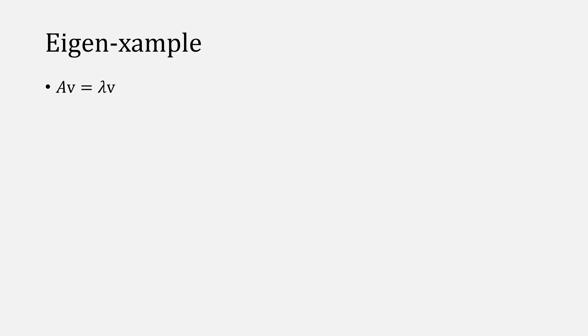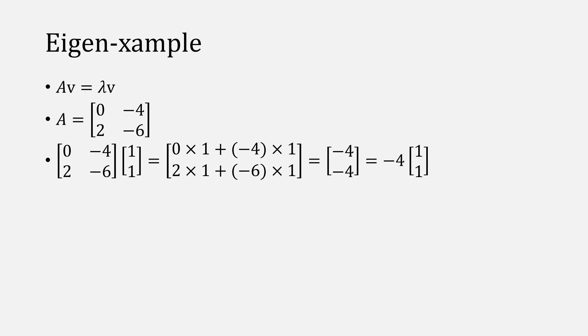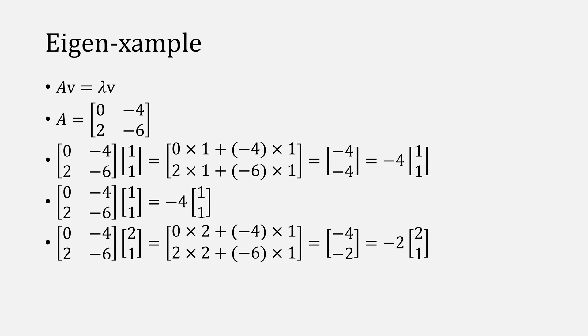Let's look at an example of the eigenvalue. If we take this matrix, 0, negative 4, 2, negative 6, and we multiply it by the eigenvector of 1,1, what we're left with is the value of negative 4 times 1,1. This means our negative 4 is the eigenvalue, and 1,1 is the eigenvector. We can do the same thing with the eigenvector of 2,1, where we're left with the eigenvalue of negative 2.